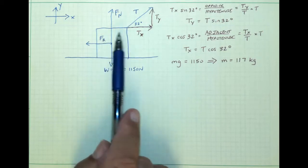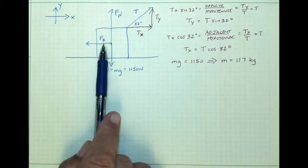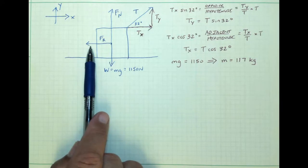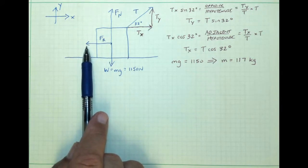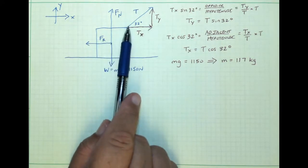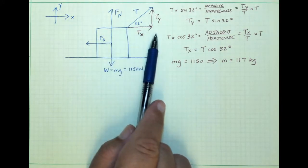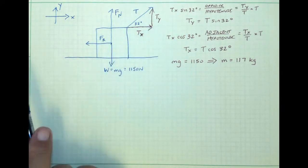And then the kinetic friction force, directed to the left, because we know that the crate is going to be moving to the right.